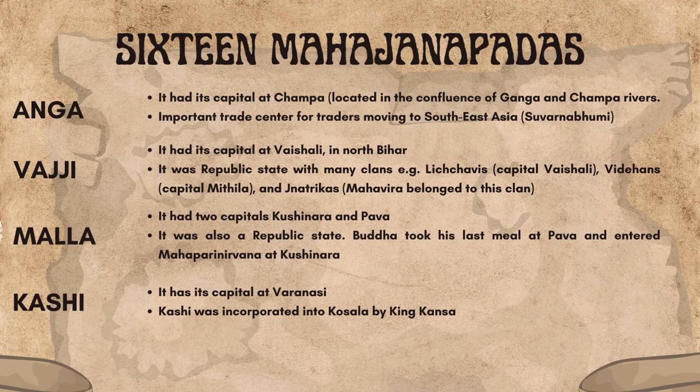Next comes the Kingdom of Malla, which had two capitals at Kushinara and Pava. It was also a republic state. Buddha took his last meal at Pava and entered Mahaparinirvana at Kushinara. Kashi follows, with its capital at Varanasi, and was incorporated into the Kingdom of Kosala by King Kansa.